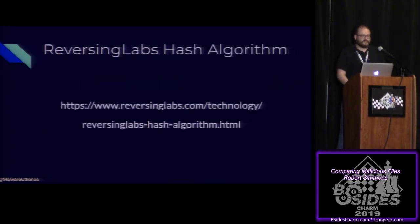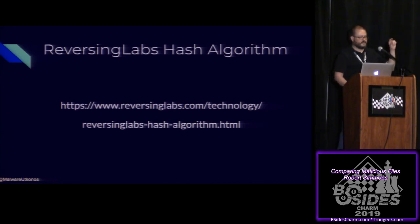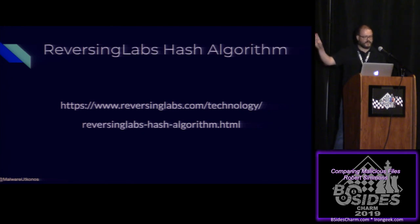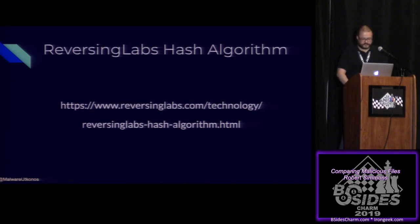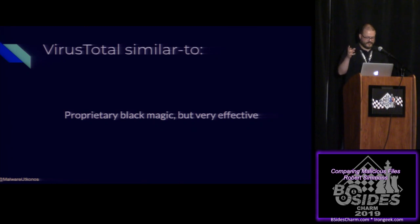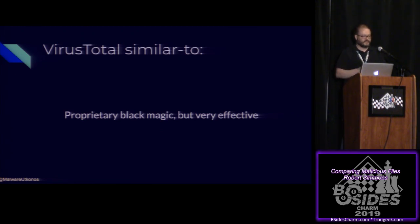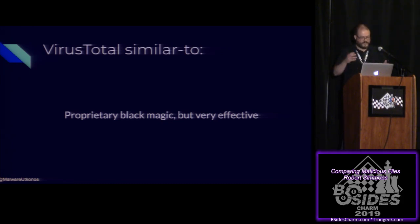There are a couple of algorithms for finding related files. Reversing Labs has a large dataset and their RHA (Reversing Labs Hash Algorithm) lets you find related files. They wrote a blog post about what their methodology is. VirusTotal also has a similar-to index — if you take a file hash and run it through the similar-to index, it returns a set of files that Google/VirusTotal decides are related via machine learning and other algorithms.